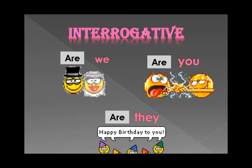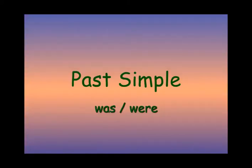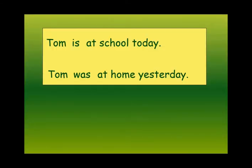This is verb to be in affirmative, negative, and interrogative form. Past simple: we use was and were. For example: Tom is at school today — this is present. In the past: Tom was at home yesterday. We take 'is' and put 'was', and we take 'are' and put 'were'.